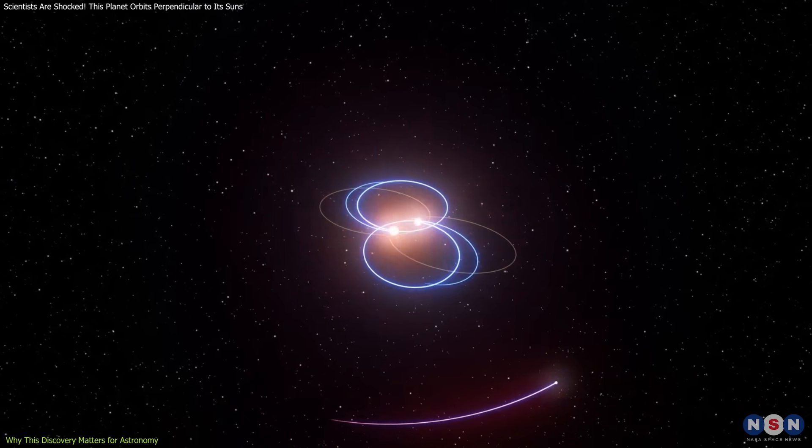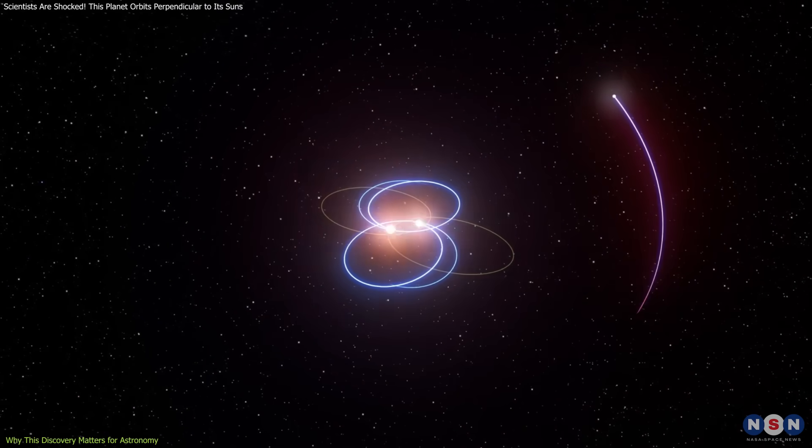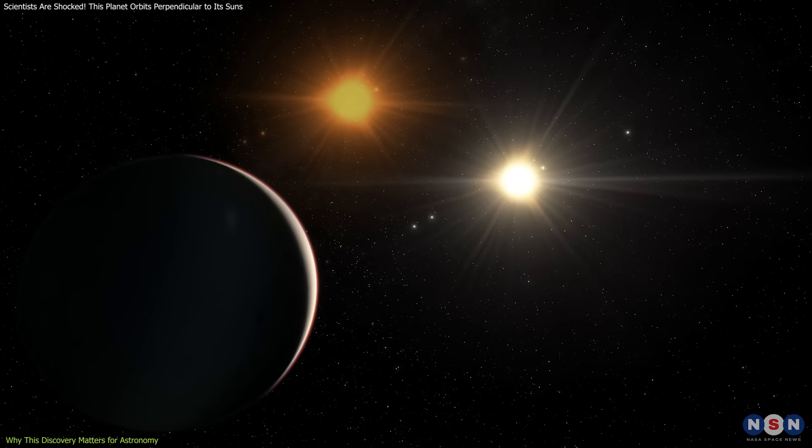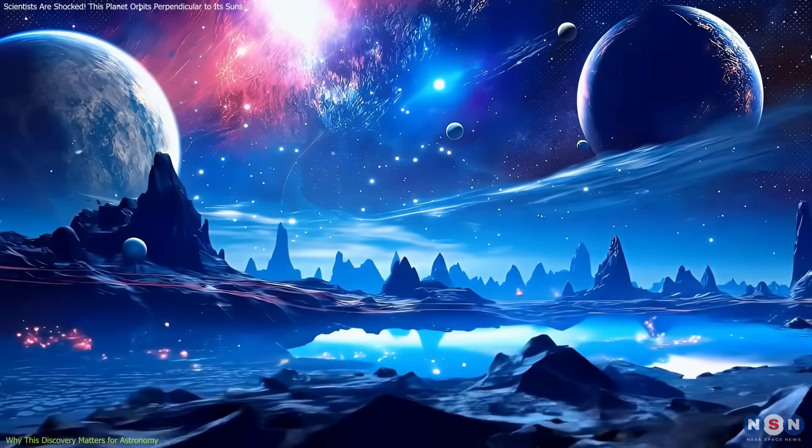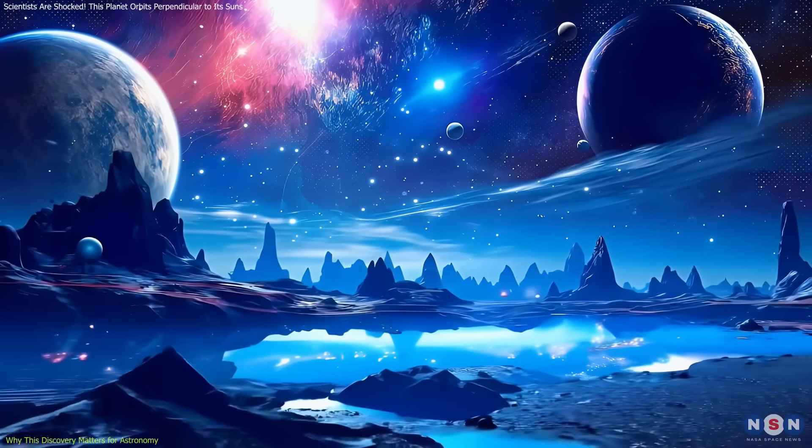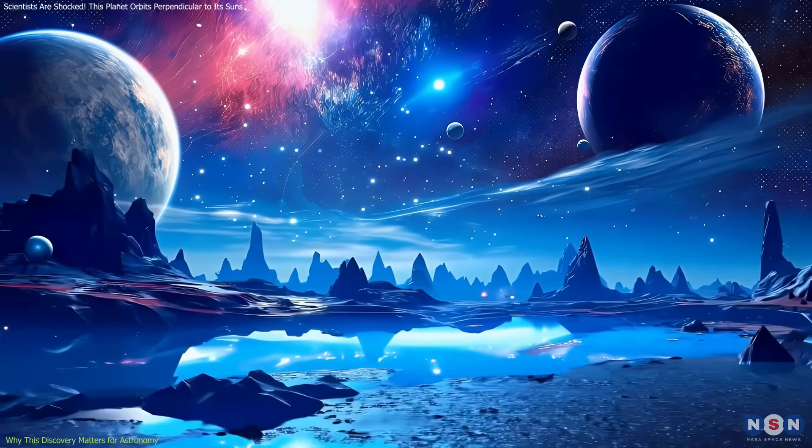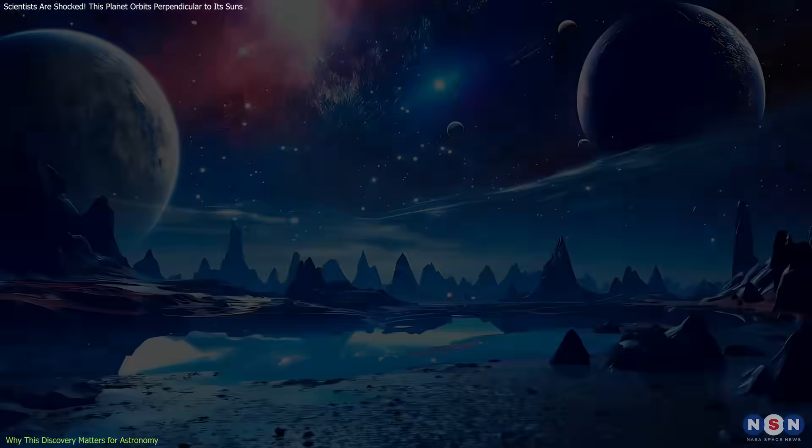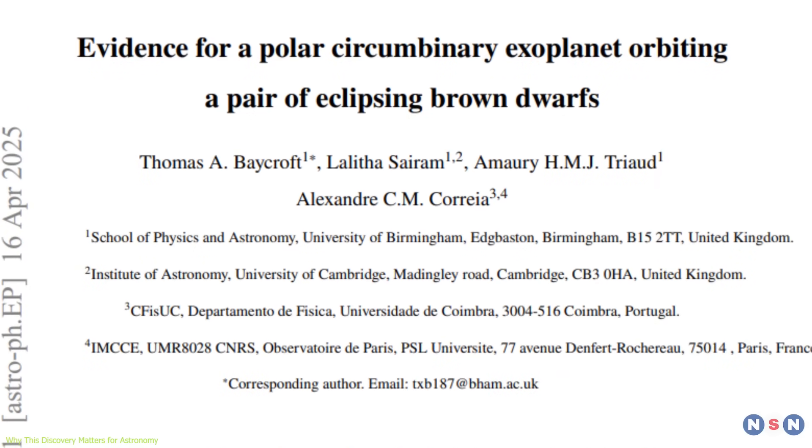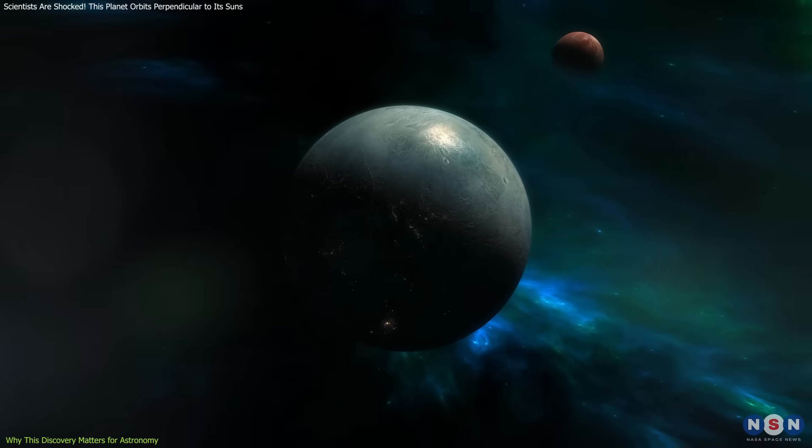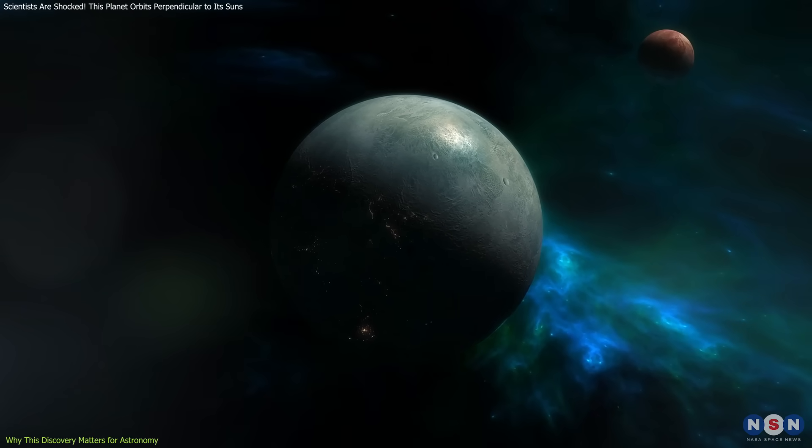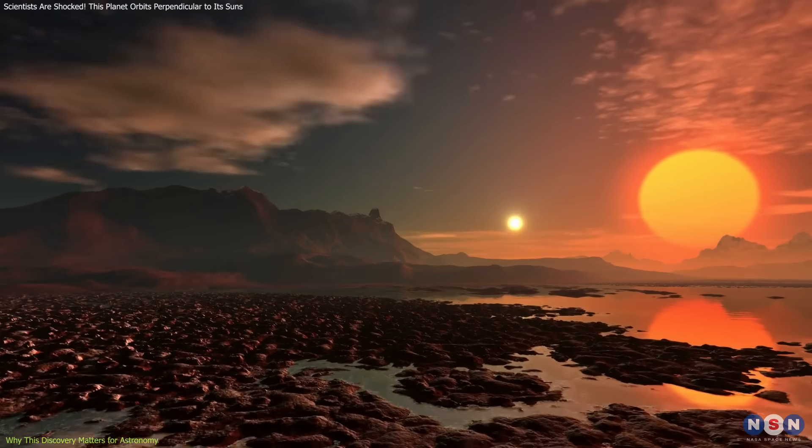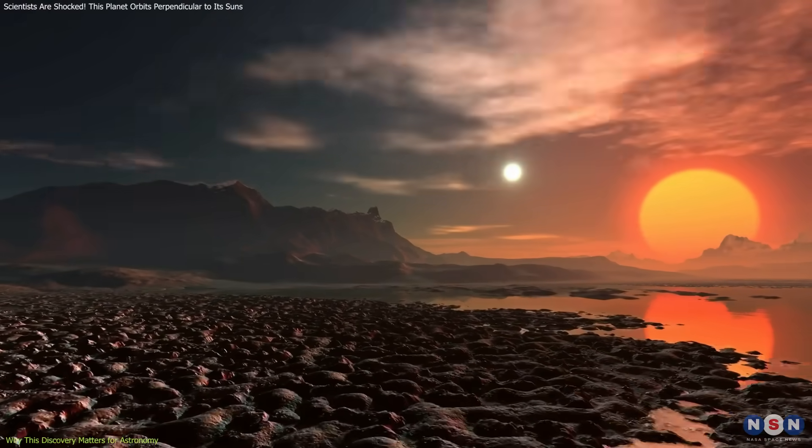Also, if this planet can maintain a polar orbit over millions or even billions of years, it implies that stability zones in binary systems might be broader than expected. Perhaps there are entire classes of exoplanets in unusual orbits that we've simply overlooked because we weren't looking for them. As noted in research from the University of Birmingham, studying these kinds of planets could reveal unknown mechanisms that allow planets to survive, or even thrive, in seemingly unstable environments.